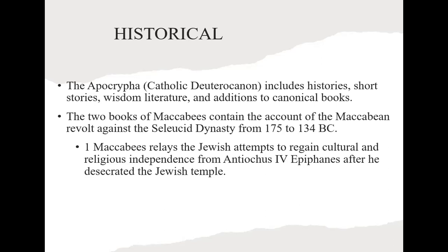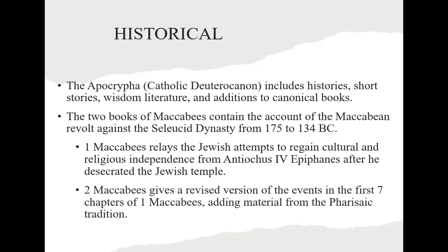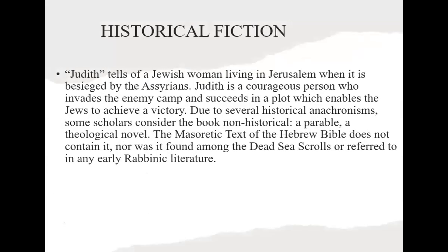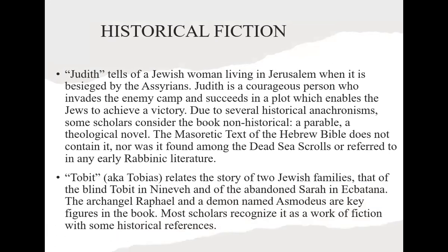This group of Jews was led by Judah Maccabee — 'Maccabee' literally means 'the hammer,' Judah the Hammer. He, his brothers, and his father rebelled against the Greeks' persecution, where they wouldn't allow circumcision. Antiochus Epiphanes eventually desecrated the Temple — he slaughtered a pig in the Temple and set up an image of himself and Jupiter. The Book of Judith tells of a Jewish woman in Jerusalem when it was besieged by the Assyrians, and how God used her to defeat the enemies of the Jews. Tobit is a story about two Jewish families; Tobit is a blind man, and there's also a woman called Sarah.